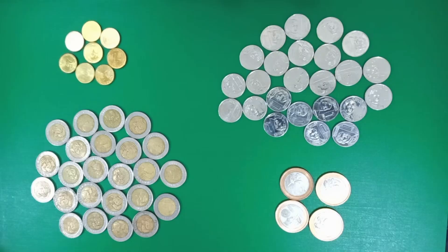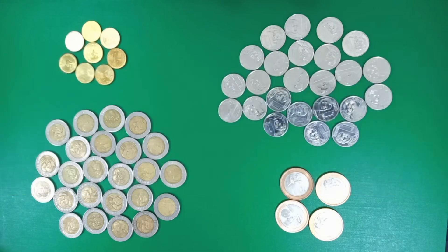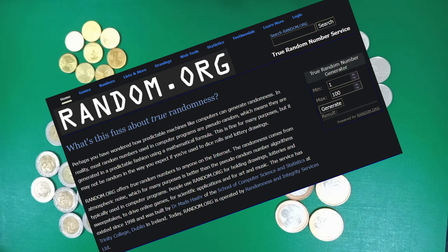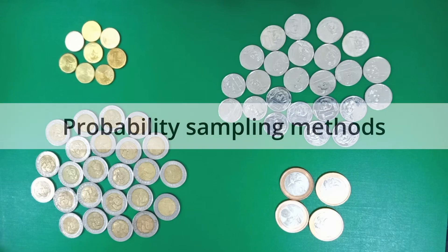Simple random sampling, or SRS, is the simplest but arguably most important sampling method, where you assign each unit in the sampling frame known and equal chances to get selected as a sample. Historically, random number generation is done through lottery or the fishbowl method, or using random number tables, but there are legitimate online random number generators that are good enough for most studies. SRS belongs to the group of sampling methods known as probability sampling methods.